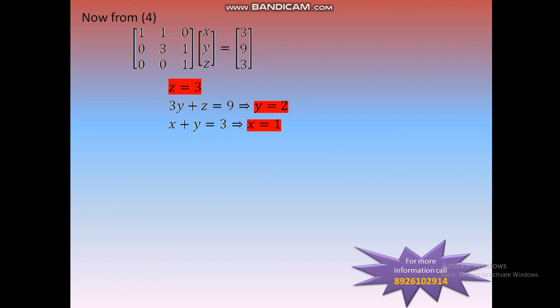z equals 3, y equals 2, x equals 1. So the required solution of the given tri-diagonal system is x=1, y=2, z=3.